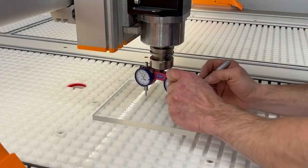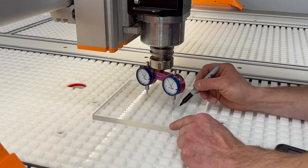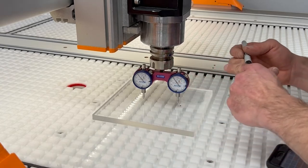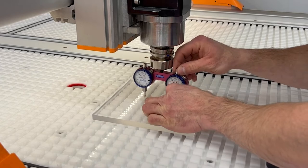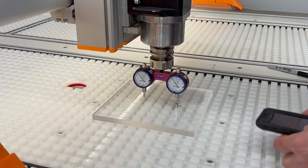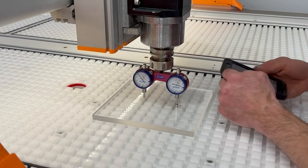Every set of tram gauges you'll buy has a set of directions. For these particular tram gauges, you have to calibrate them off of your CNC machine before you begin. That requires a small magnet to be placed underneath one of the indicators and then setting zero from that point.